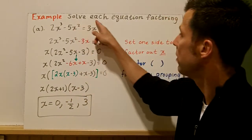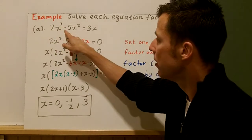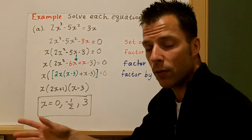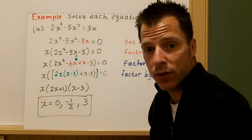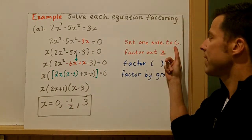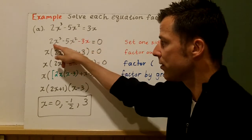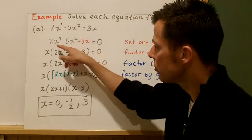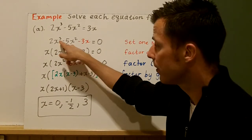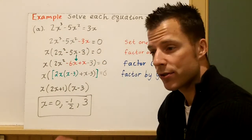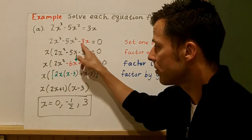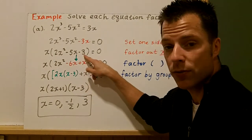Our first example asks us to solve each equation by factoring. The first equation is 2x³ − 5x² = 3x. Whenever we solve a polynomial equation, we want to set the y value equal to zero — one side has to equal zero because we're looking for the roots and the intercepts. So the first step: subtract 3x from both sides, giving us 2x³ − 5x² − 3x = 0. There are only three terms, so factoring by grouping doesn't seem right. Quadratic and perfect square trinomials won't work because this is a cubic. So let's look for the greatest common factor — there is an x common to all three terms, so we factor out the x, leaving x(2x² − 5x − 3) = 0.